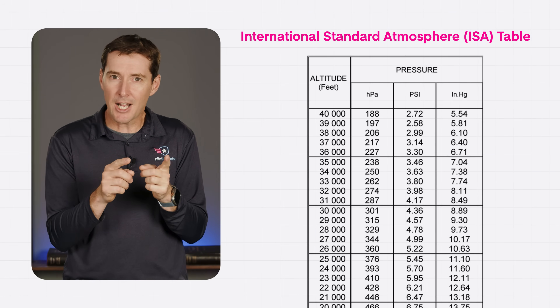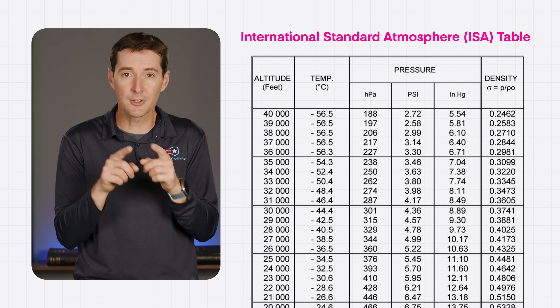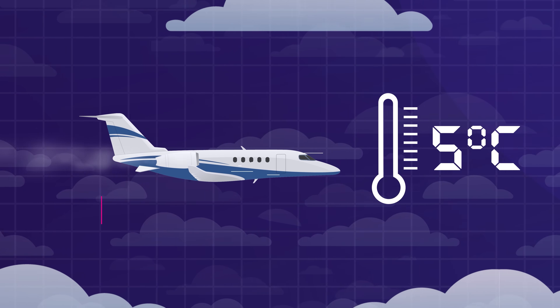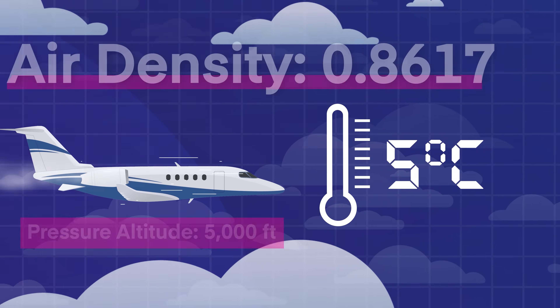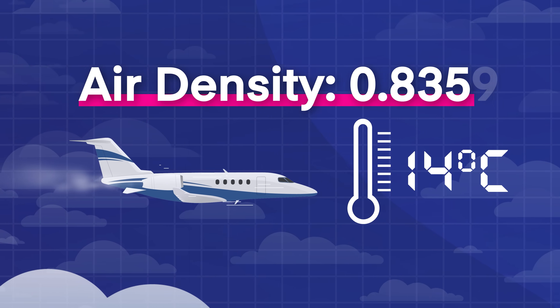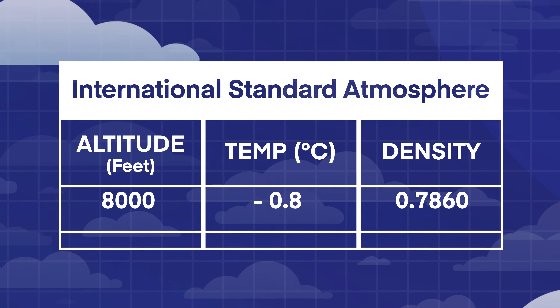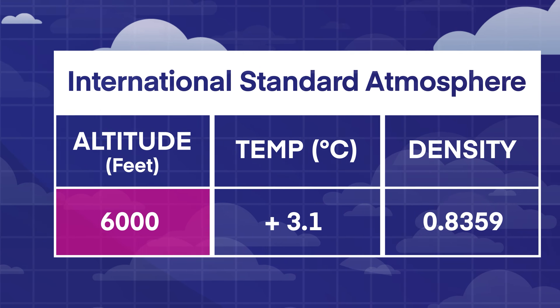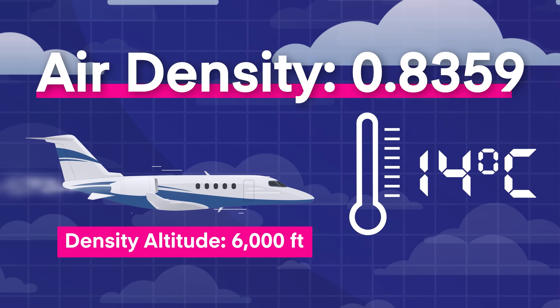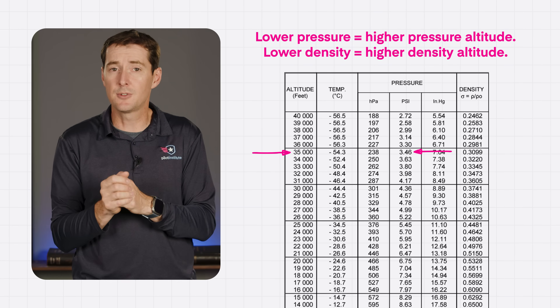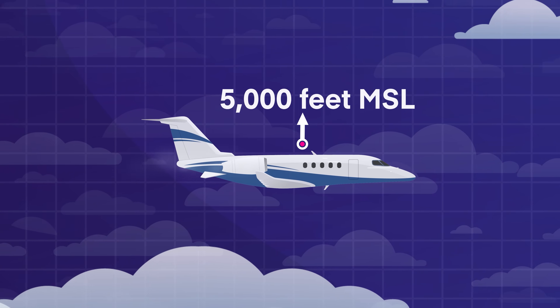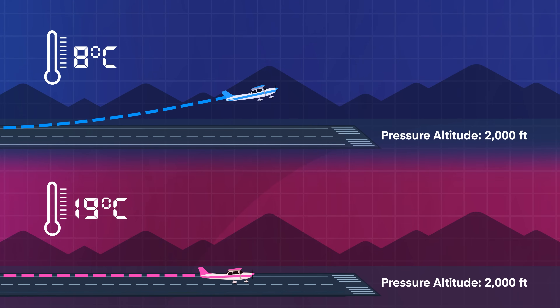We need to bring in density altitude, which is basically pressure altitude adjusted for non-standard temperature. Each altitude in the standard atmosphere table has a standard temperature and density. If the outside temperature matches the standard temperature for your pressure altitude, your airplane experiences the standard air density listed in the table. But if it's warmer or colder, the air density will be different — thinner or denser than standard. If you looked up that temperature-corrected density in the standard atmosphere, it would line up with a different altitude. That's your density altitude: the altitude in the standard atmosphere where you'd find the same air density, and what altitude your airplane feels like it's flying at.